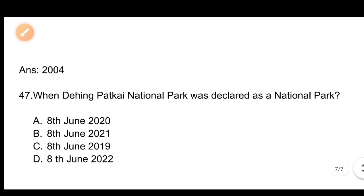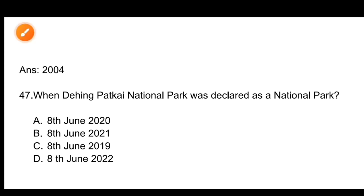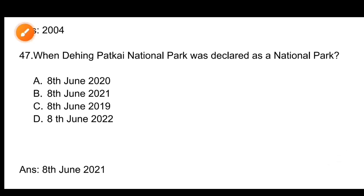Question number 47, the last question: When was Dihing Patkai National Park declared as a National Park? Options: A) 8 June 2020, B) 8 June 2021, C) 8 June 2019, D) 8 June 2022. Note that examiners may try to confuse students between dates. The correct answer is B, 8 June 2021. Both Dihing Patkai and Raimona National Parks were declared as National Parks in 2021.